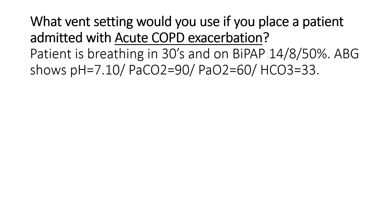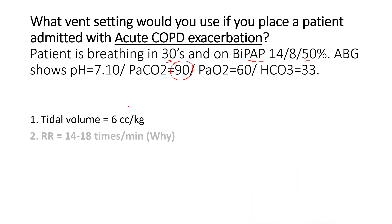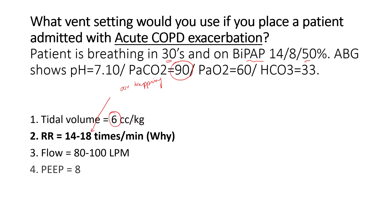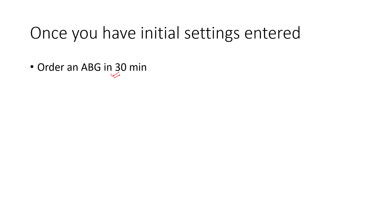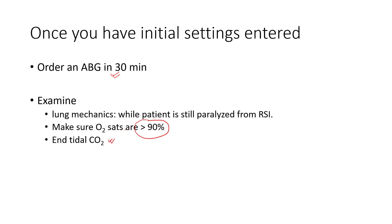Now, a patient with acute COPD exacerbation: this patient is breathing pretty fast, is on BiPAP with 50% oxygen, and has CO2 retention with a pCO2 of 90. You would use 6 cc per kg tidal volume, but the respiratory rate should be lower — we typically keep it lower because COPD patients have problems with air trapping, and faster respiratory rates can decrease expiratory time. Use flow rates of 80, a PEEP of 5, and FiO2 of 100%. Once you have initial vent settings entered, order a blood gas in 30 minutes and examine the lung mechanics while the patient is still paralyzed from the rapid sequence intubation. Make sure that the O2 saturation is more than 90%, and if you have end-tidal measuring capabilities, please order them.